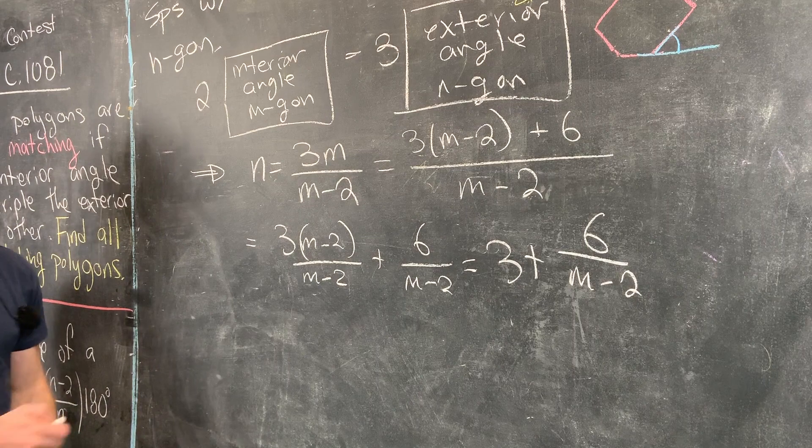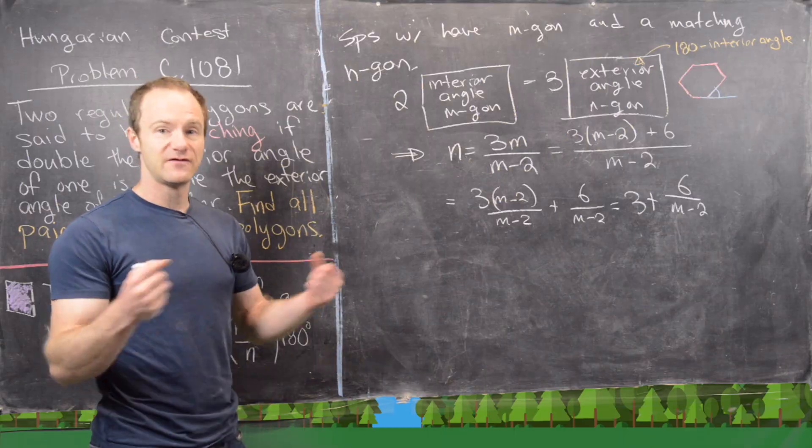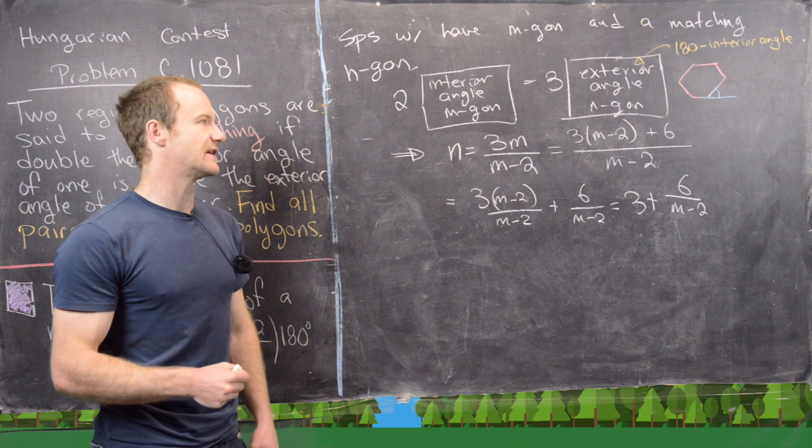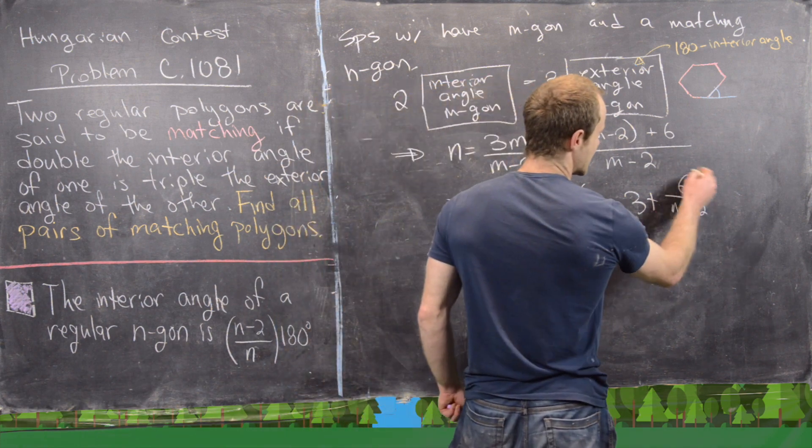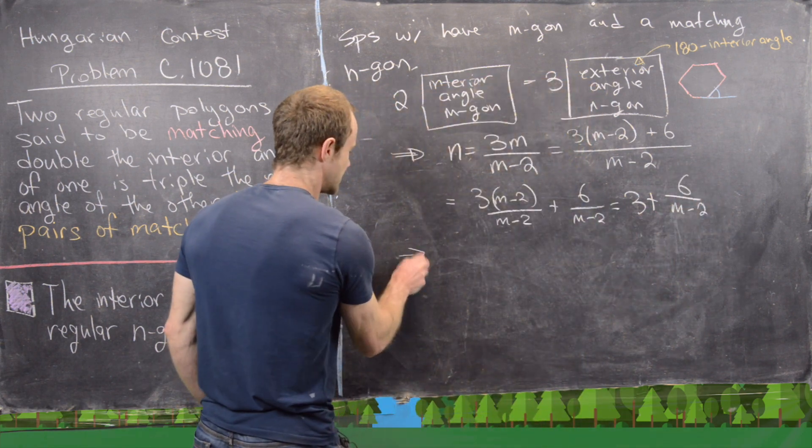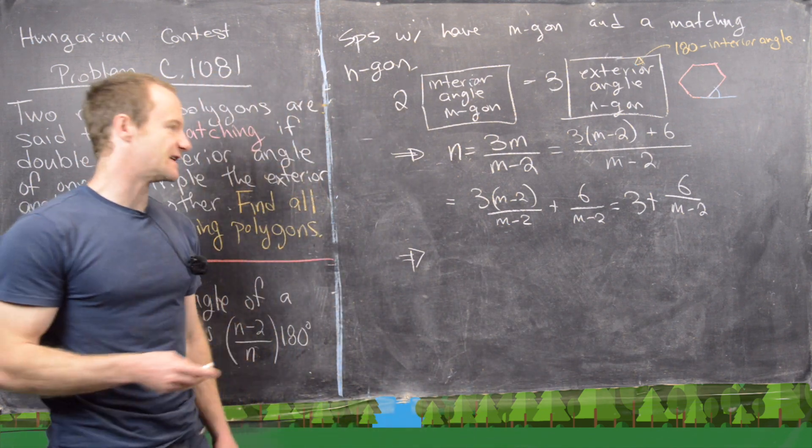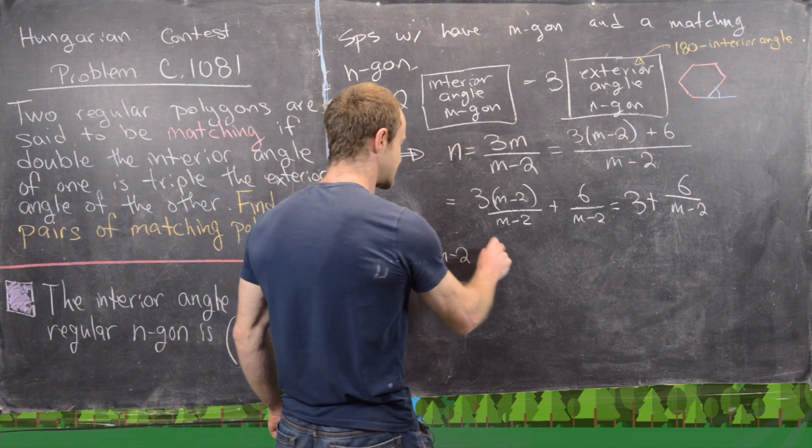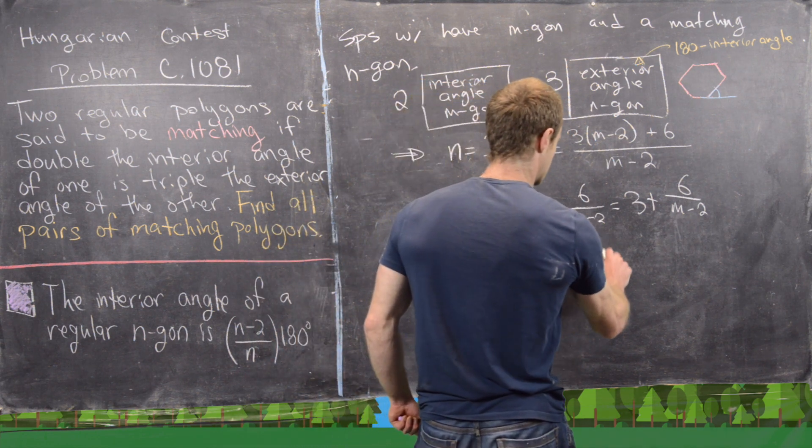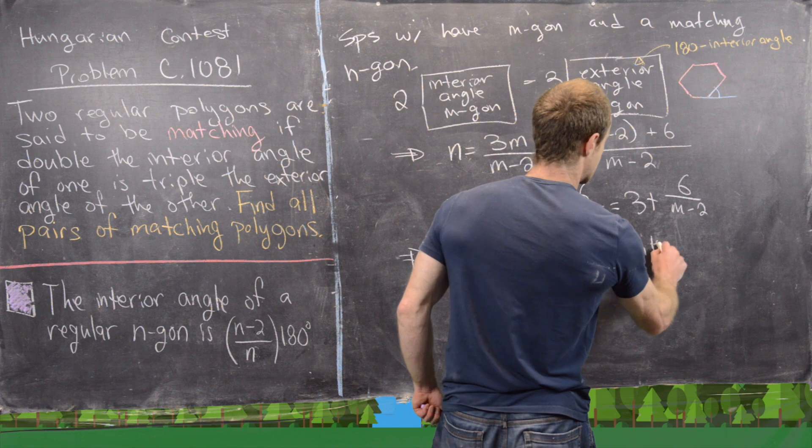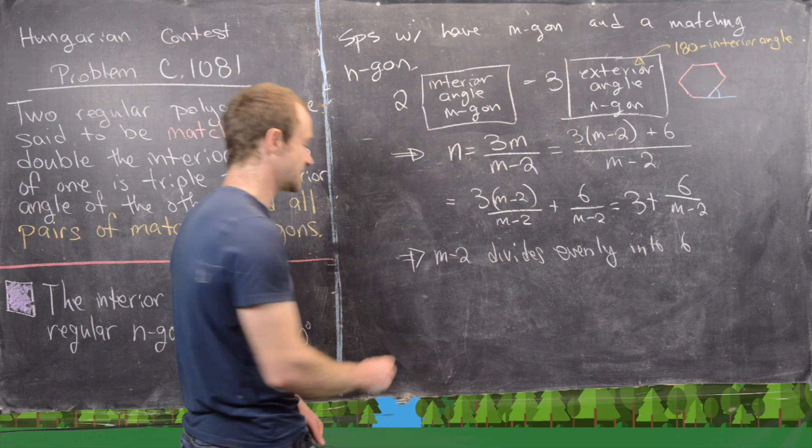But let's recall that n was a natural number and m was a natural number as well. In fact, they're both at least 3 given the fact that we're talking about regular polygons in this case. But anyway, what we have here is this tells us that 6/(m-2) needs to be a natural number. In other words, m-2 divides evenly into 6.